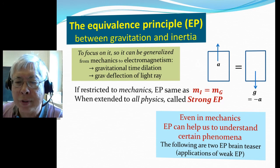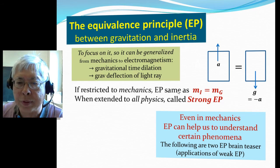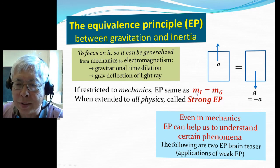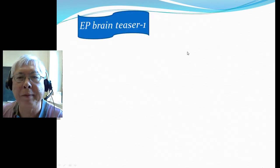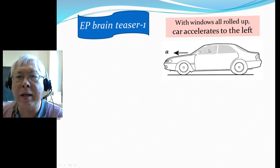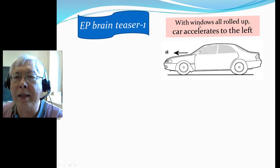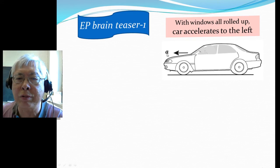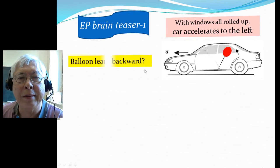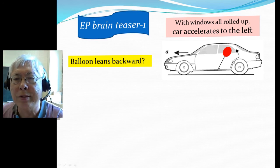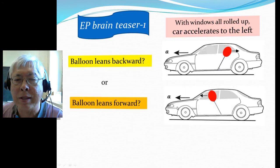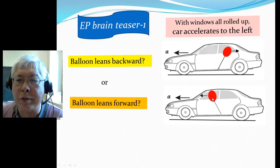But even for mechanics, the equivalence principle can still be helpful to understand certain phenomena. It's a lot easier to see the results than going through the mechanical calculation using inertial mass equal to gravitational mass. I'll give you two examples of this application. First, I'll talk about a car accelerating. Inside there's a balloon with all the windows rolled up. The car accelerates to the left, and the question is whether the balloon will lean backwards or forward.